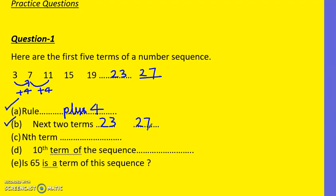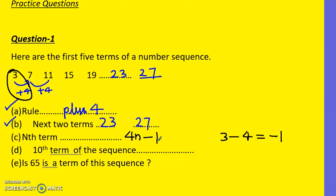For the nth term, the difference is plus 4. Using the second method, we multiply 4 times n to get 4n. Then the difference between the first term (3) and the common difference (4): 3 take away 4 is minus 1. So the nth term is 4n minus 1.